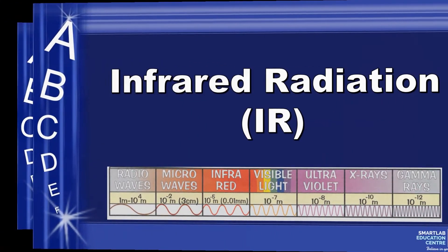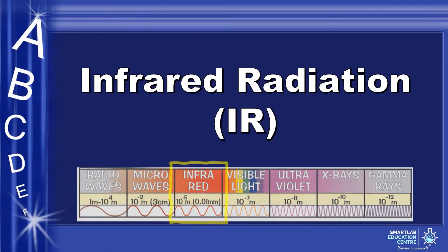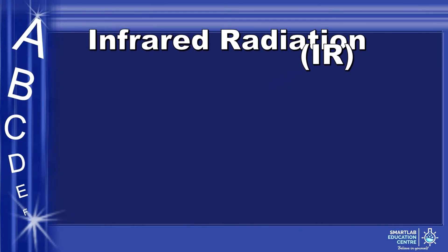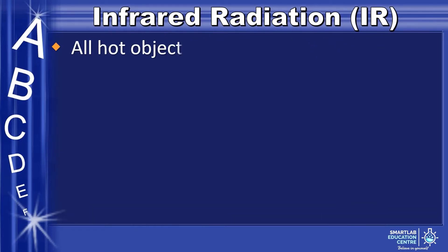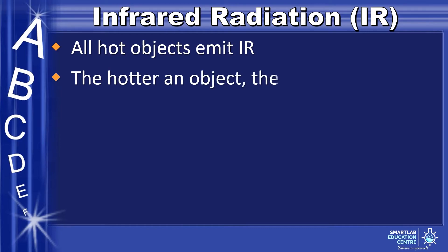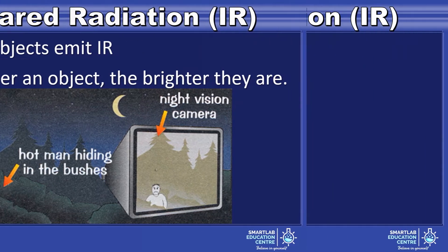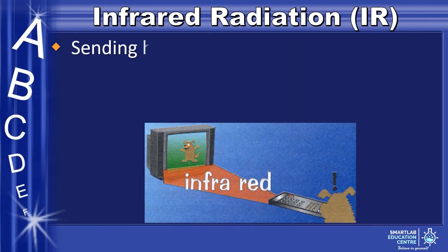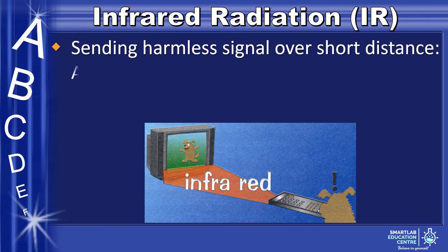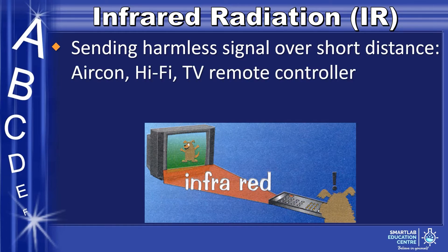Next, infrared radiation, or IR in short. All hot objects emit IR. The hotter an object, the brighter they are. One application is night vision cameras. IR is also used to send harmless signals over short distances, for example the remote controller for air conditioning, hi-fi, and TV. IR is also used in intruder alarm systems.